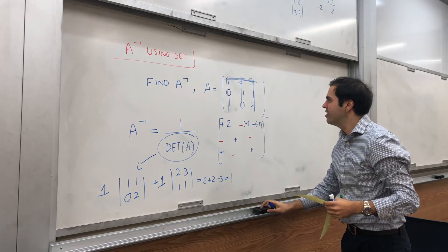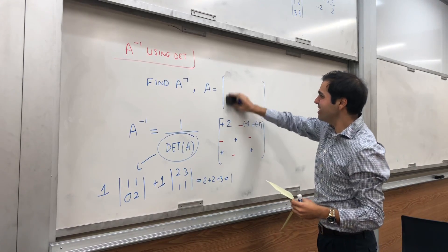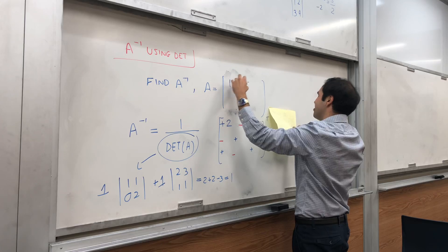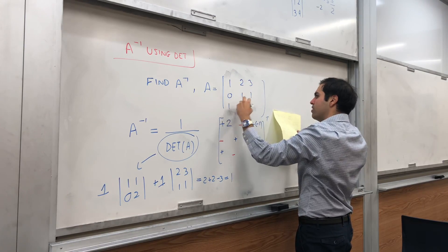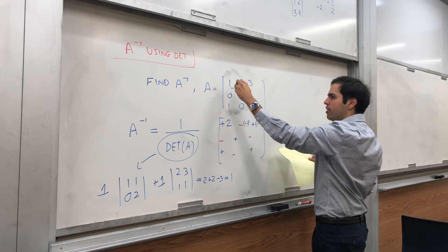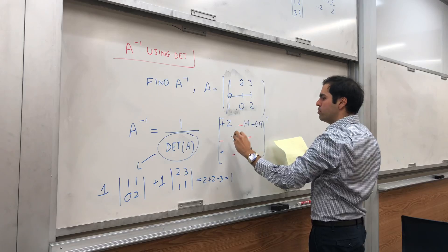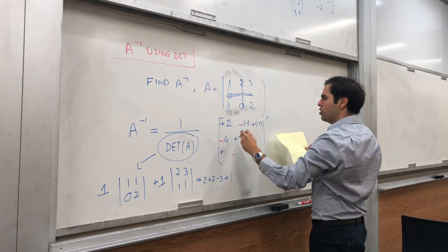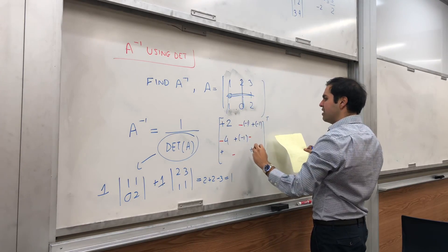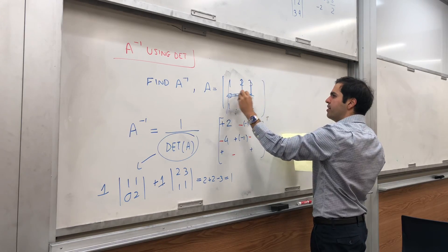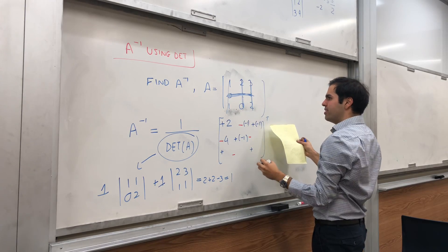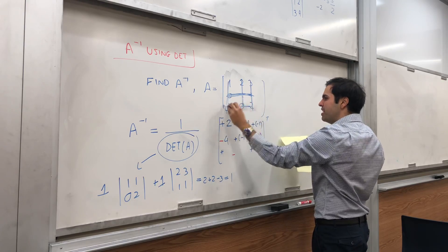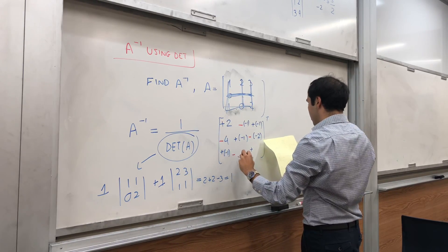Then, erase and place more Bombs. You place a Bomb here and get the determinant of [2, 3; 0, 2], so you get 4. You place a Bomb in the middle for [1, 3; 1, 2], which becomes 2 − 3 = −1. Then you place a Bomb here for [1, 2; 1, 0], which becomes −2. Continuing, you place a Bomb here and get −1, 1, and 1.